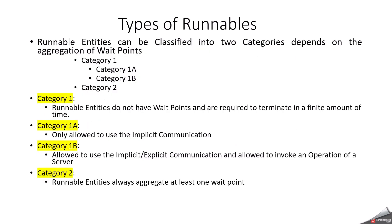Types of runnables: runnable entities can be classified into two categories depending on the aggregation of wait points — category 1 and category 2. Category 1 has category 1a and category 1b. Category 1 means runnable entities do not have wait points and are required to terminate in a finite amount of time, meaning a category 1 runnable does not have a waiting state. Category 2 means runnable entities always aggregate at least one wait point, meaning in category 2 we will have a wait state.